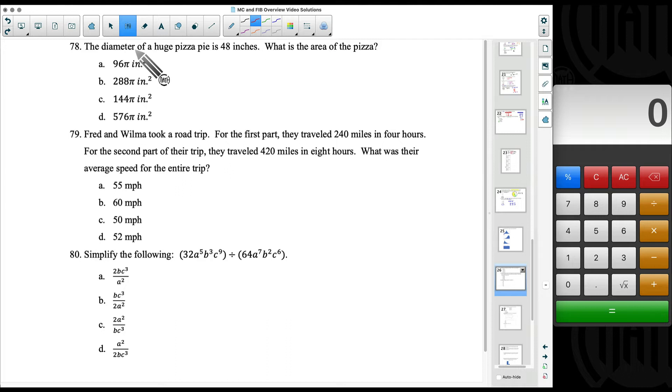Number 78. The diameter of a huge pizza pie is 48 inches. What is the area of the pizza? So our question is asking for the area of a pizza and we're given the diameter. Diameter automatically means we have a circle. That diameter is 48 inches. We want the area of the pizza.